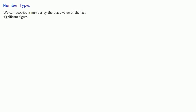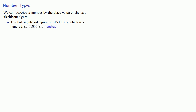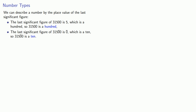Significant figures allow us to describe a number by the place value of the last significant figure. For example, the last significant figure of 31500 is 5, which is in the hundreds place — so 31500 is accurate to the hundreds. If I put a bar over the next zero, that becomes a significant figure in the tens place, making 31500 accurate to the tens.